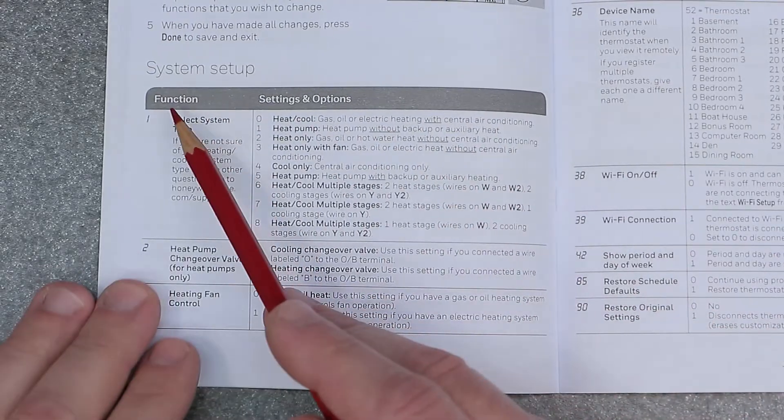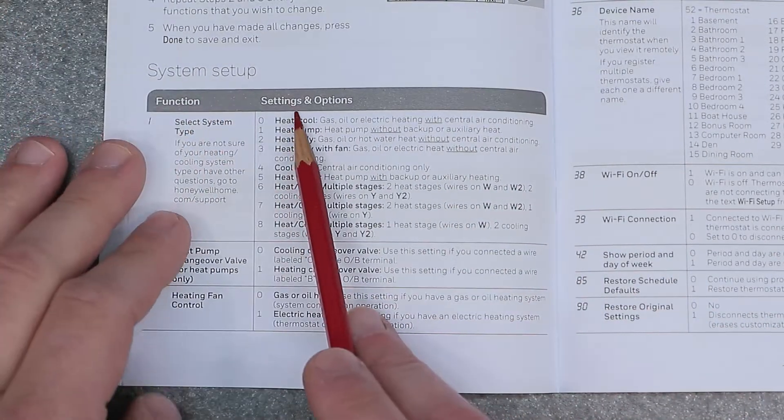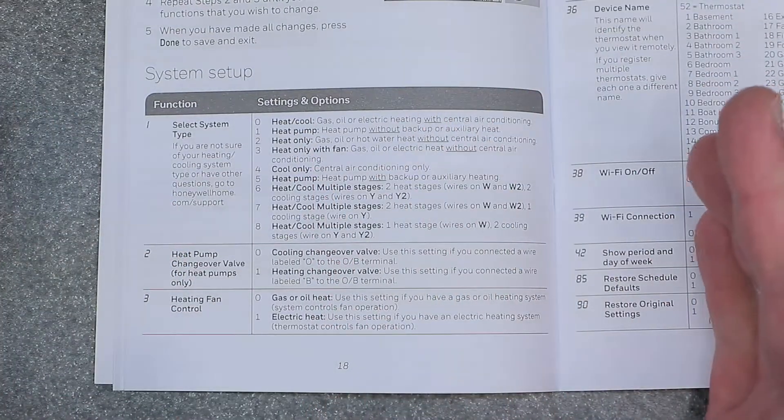Alright, so we have the function number, which is the one on the left. And then we have the setting in option, which is the number on the right.